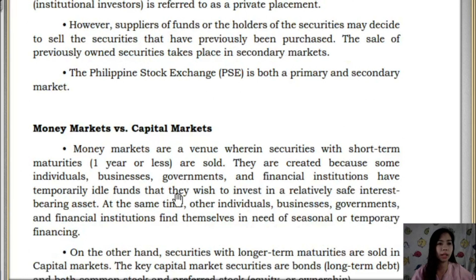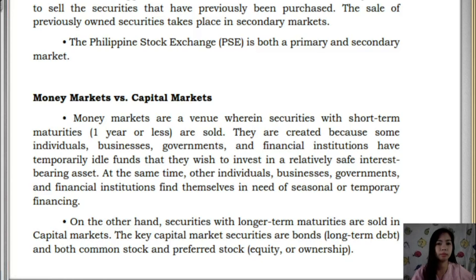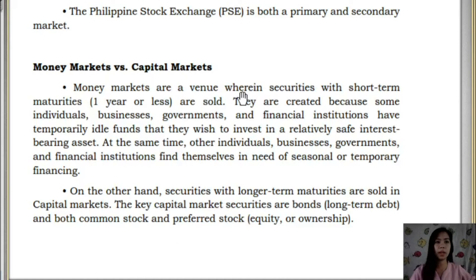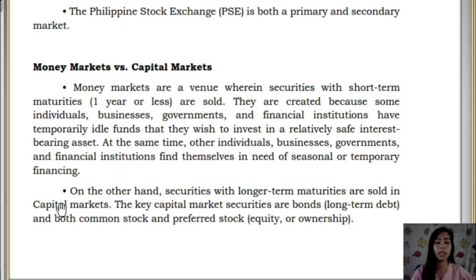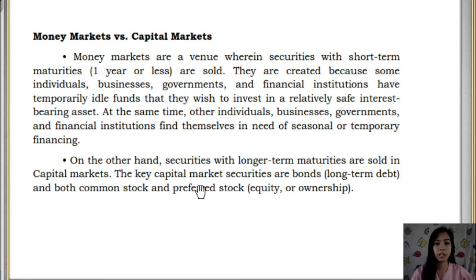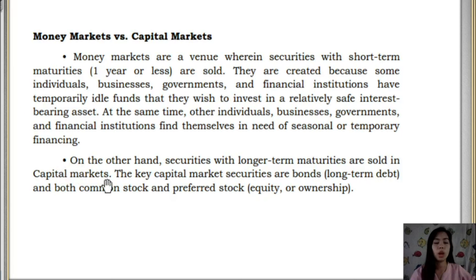Next are money markets and capital markets. The money market is where securities with short-term maturities — one year or less — are sold. On the other hand, securities with longer maturities are sold in capital markets. If you want to invest in longer-term securities such as stocks — preferred or common — that goes to capital markets, which is one year and above.